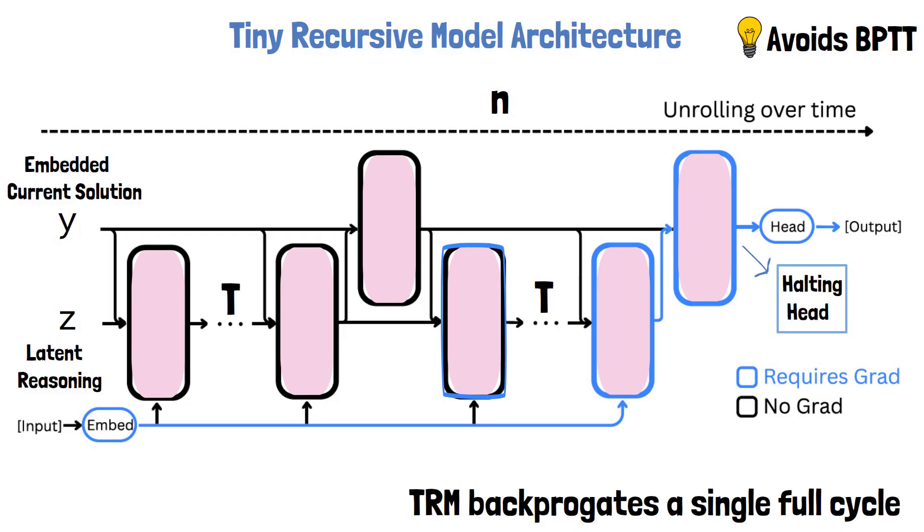Before wrapping up, there's an important nuance to mention. The paper's title, Less is More, suggests that smaller might be better for this architecture. However, these results may actually reflect a fight against overfitting, since the model was trained on very limited data. A smaller network was possibly necessary to prevent overfitting. So in this case, less really means just enough—small enough to generalize from scarce data, yet still powerful thanks to its recursive reasoning design.